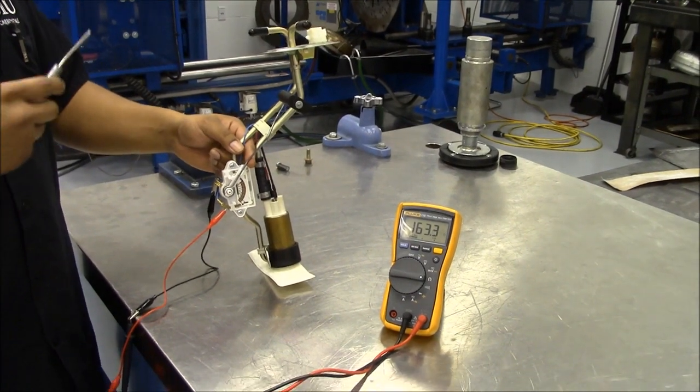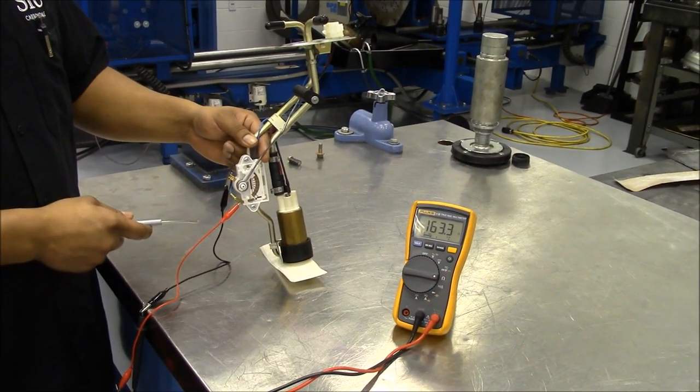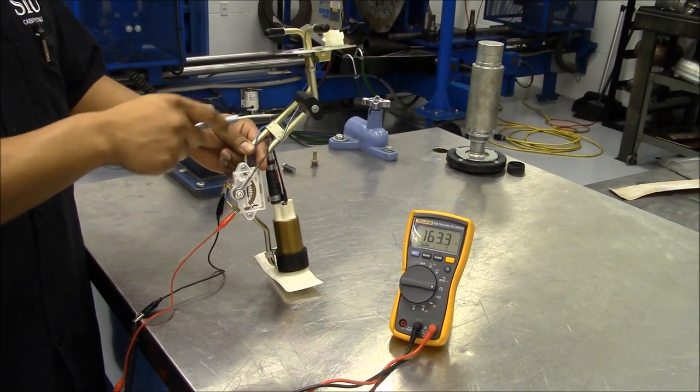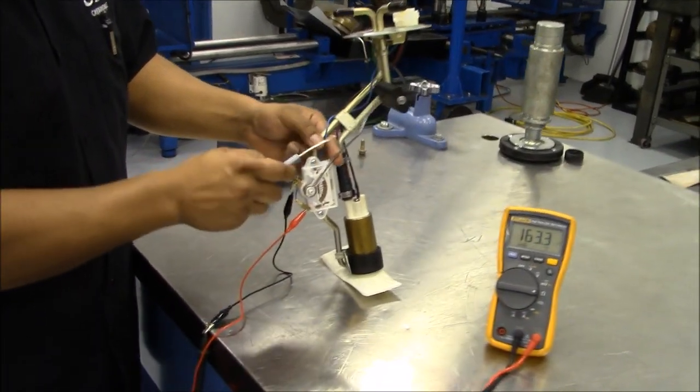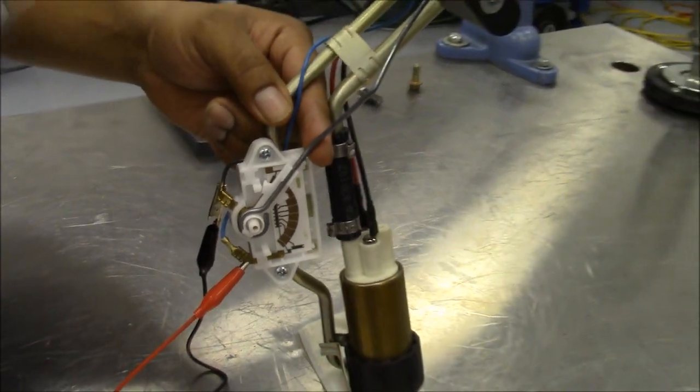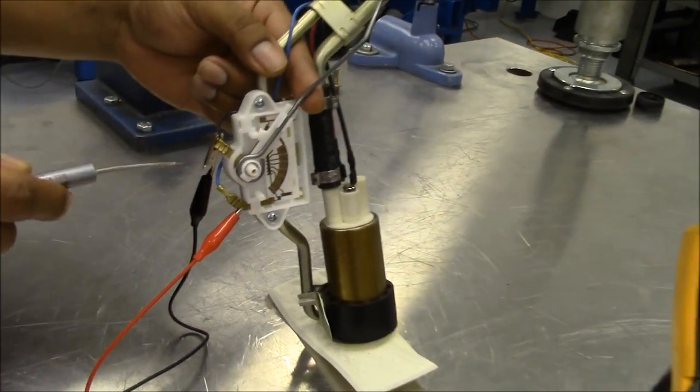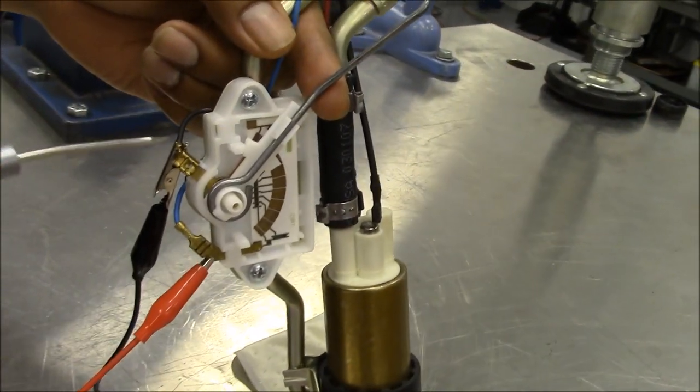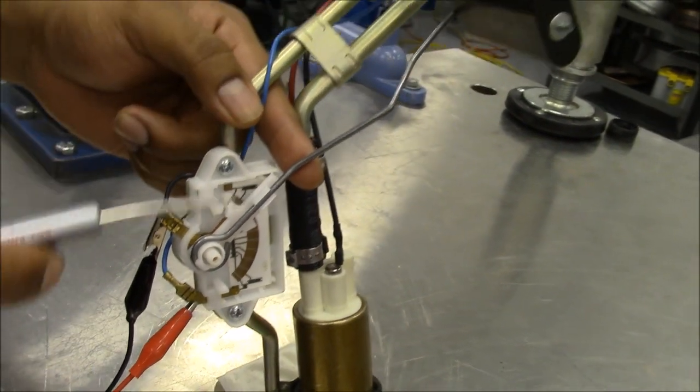Here is one way to check your sending unit for proper operation using a multimeter. Here, this floater and this arm right across is a variable resistor which interprets fuel level. It then sends that information back to your fuel gauge. I have hooked up one of my leads to my signal and one to ground. Now let's take a look at the multimeter.